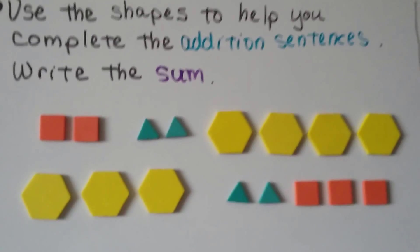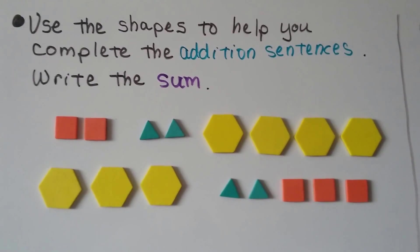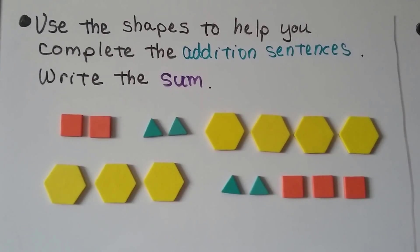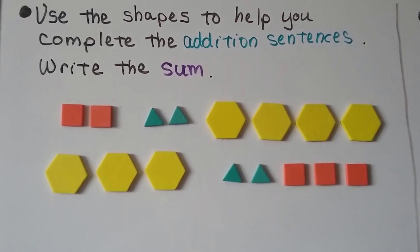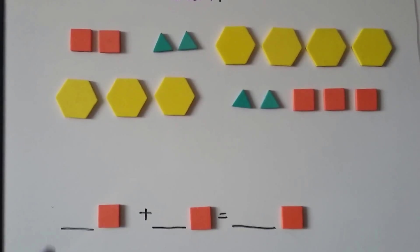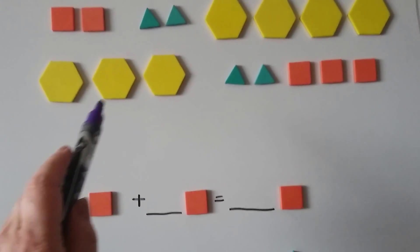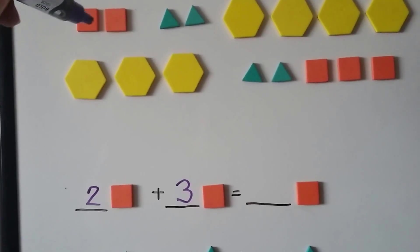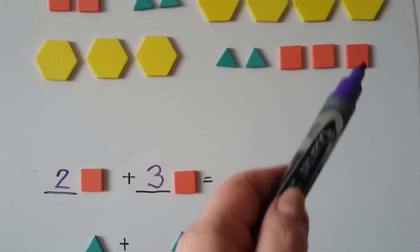Here we've got a lot of shapes. The shapes will help you complete the addition sentences and write the sum. The orange ones are in two groups; the green ones are in two groups; the yellow ones are in two groups. We need to combine them by color and shape. The orange ones: one, two here and one, two, three over here. Two plus three equals one, two, three, four, five orange ones altogether.